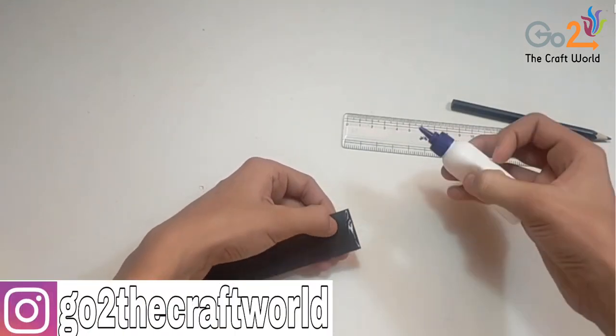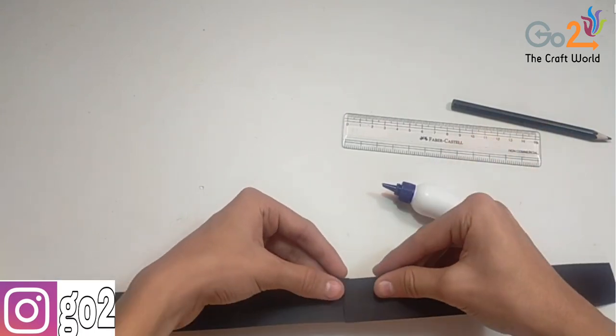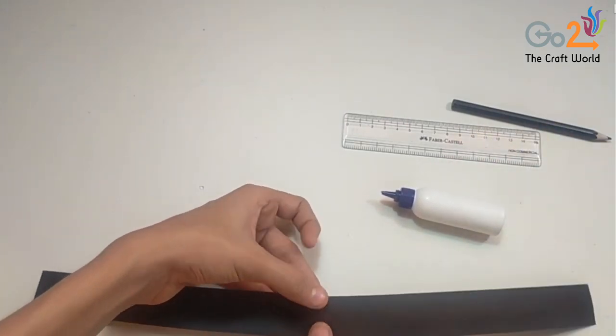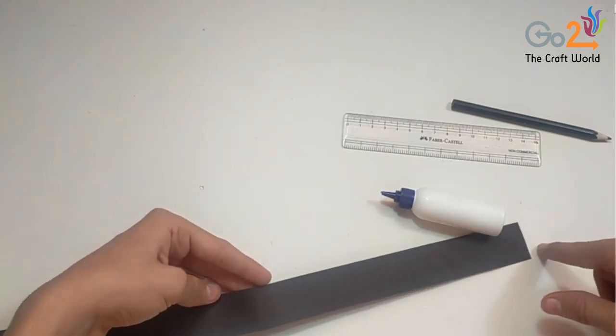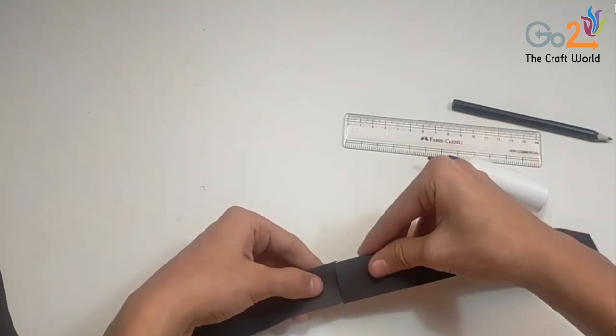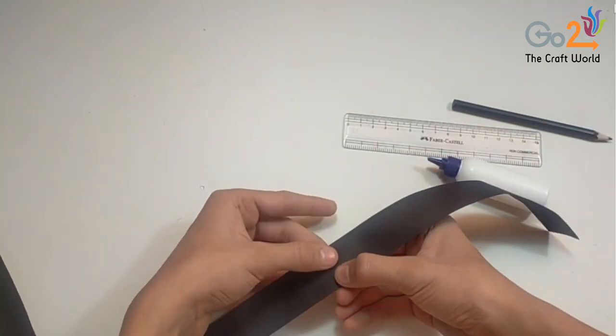So now we will join around 15 to 20 strips for the keychain. Complete it similarly.